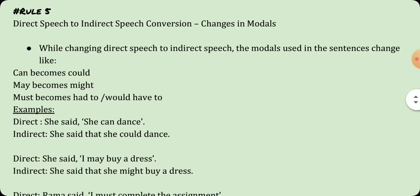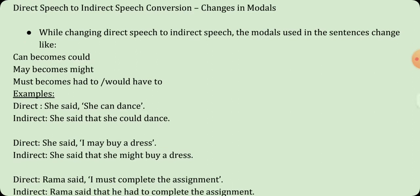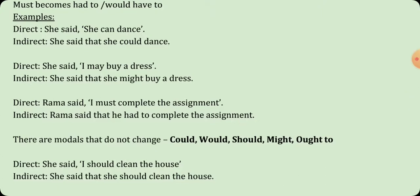The fifth rule is about the changes in modals. While changing direct speech to indirect speech, the modals used in the sentences change: 'can' becomes 'could,' 'may' becomes 'might,' 'must' becomes 'had to' or 'would have to.' For example, 'She said she can dance' becomes 'she said that she could dance.' 'She said I may buy a dress' becomes 'she said that she might buy a dress.' 'Rama said I must complete the assignment' becomes 'Rama said that he had to complete the assignment.'